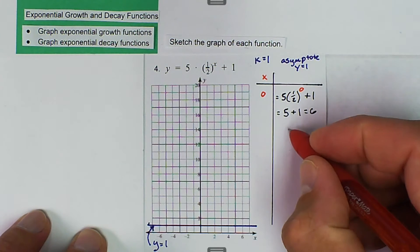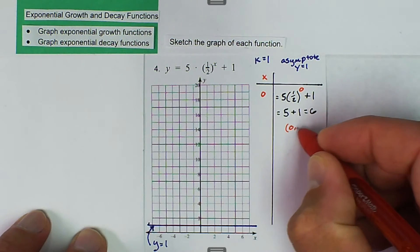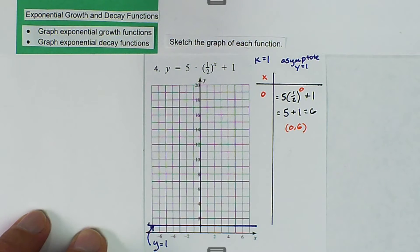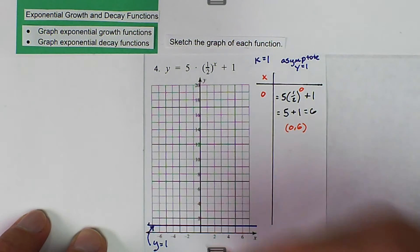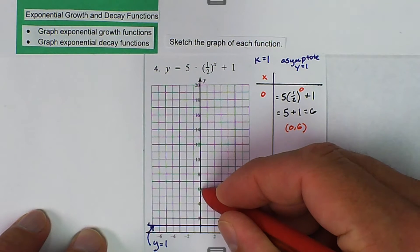So we get the ordered pair 0 comma 6. So 0, 6 is right there.